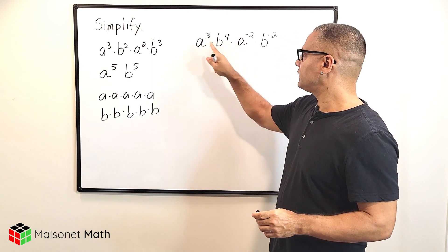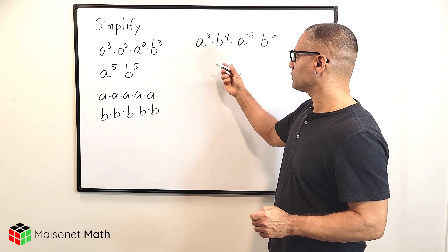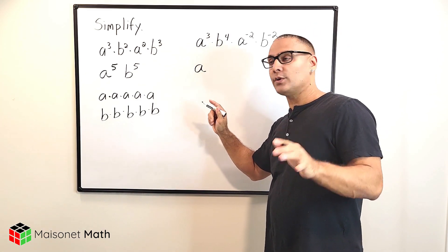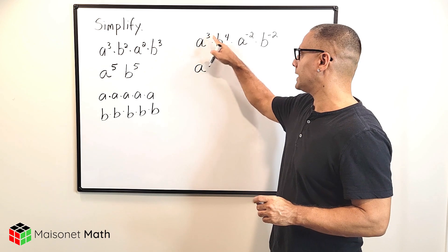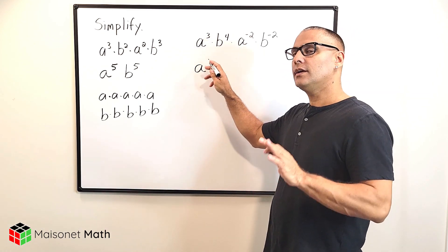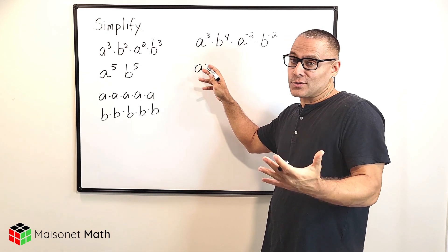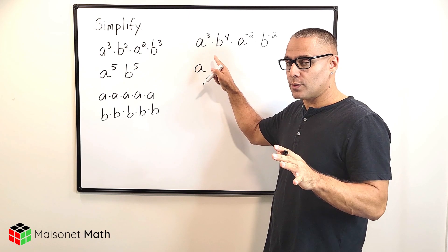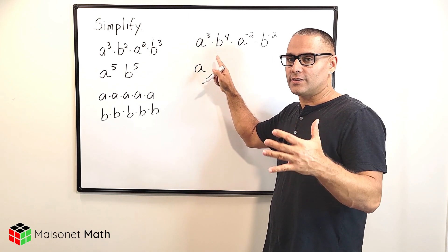So let's take our a variables and multiply those together. We just write the variable a one time. Now we just take our exponents, which are three and negative two, and add those together. And that would give us positive one. Now whenever you have one as an exponent, you actually don't write anything there. So if you do not see any exponents, that simply means it is to the first power.